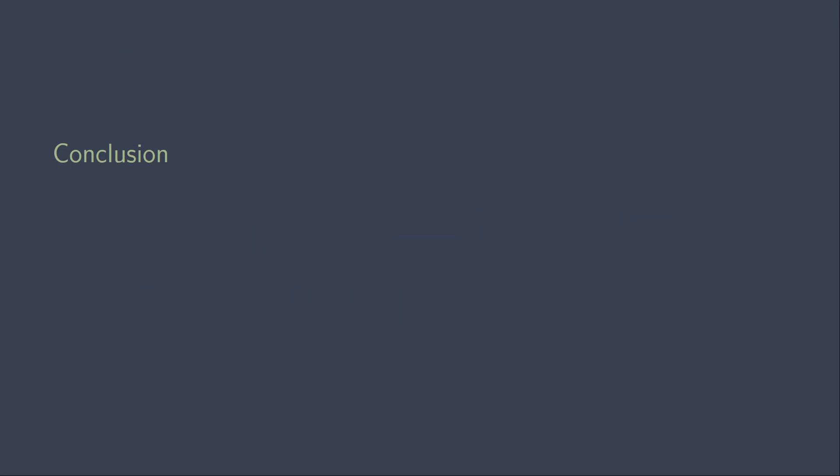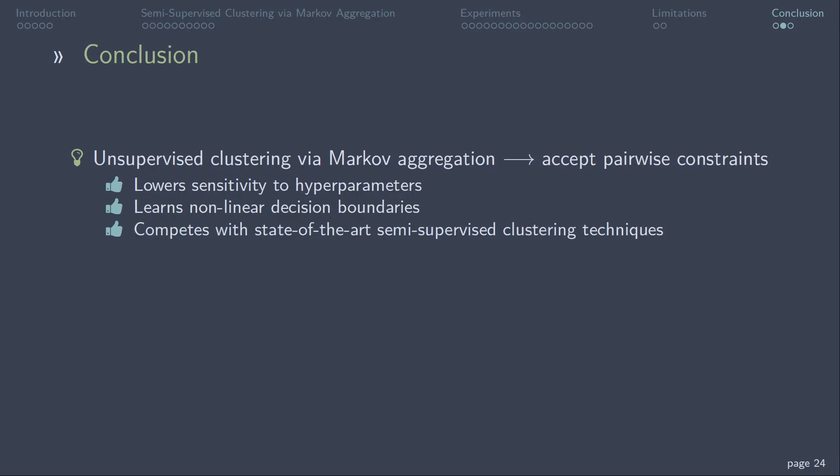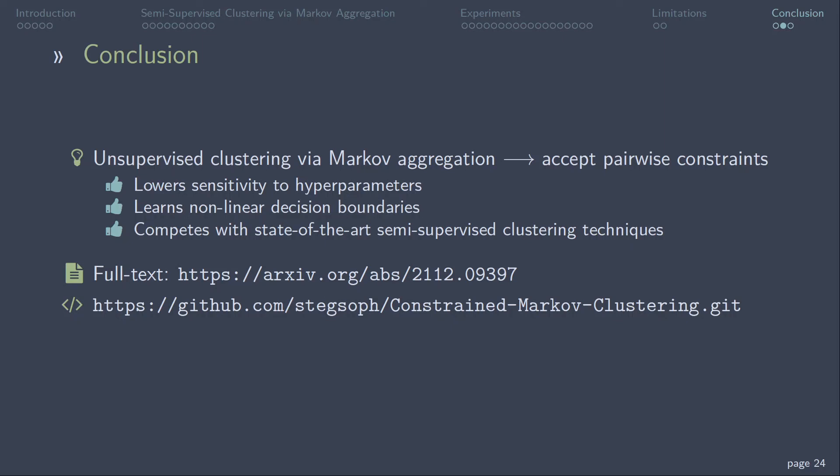Summing up some points of this presentation. We extended the unsupervised clustering algorithm via Markov aggregation such that it can accept pairwise constraints. The pairwise constraints lower the sensitivity to hyperparameter changes. COMAC can learn non-linear decision boundaries and competes with state-of-the-art semi-supervised clustering algorithms. Here are the links to our full paper on archive and to my GitHub repository containing the code and data for the experiments. Thank you for your attention!